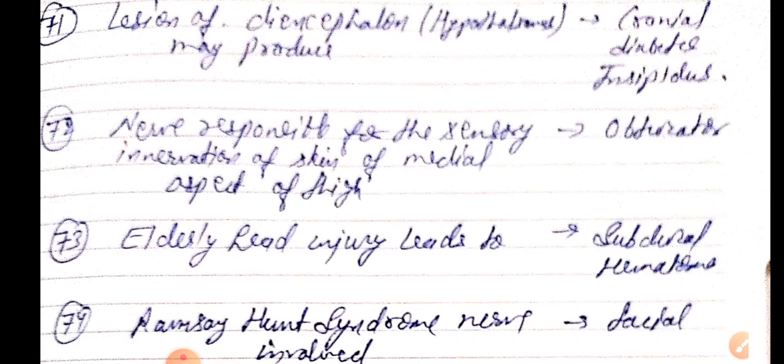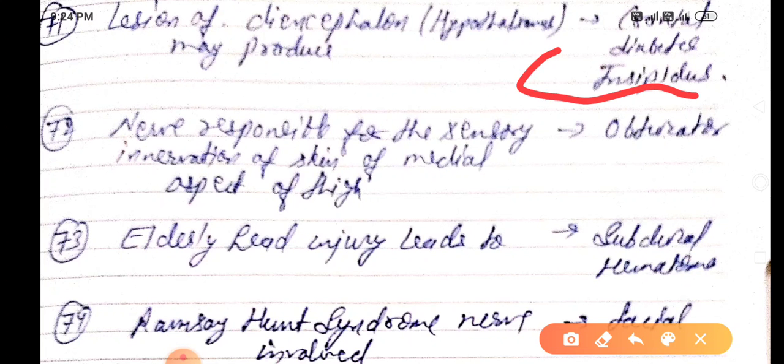Lesion of diencephalon hypothalamus may produce central diabetes insipidus or cranial diabetes insipidus. Nerve responsible for the sensory innervation of skin of medial aspect of thigh is obturator. Elderly head injury leads to subdural hematoma.